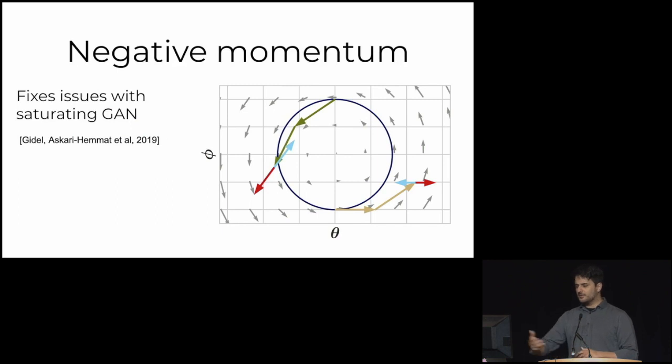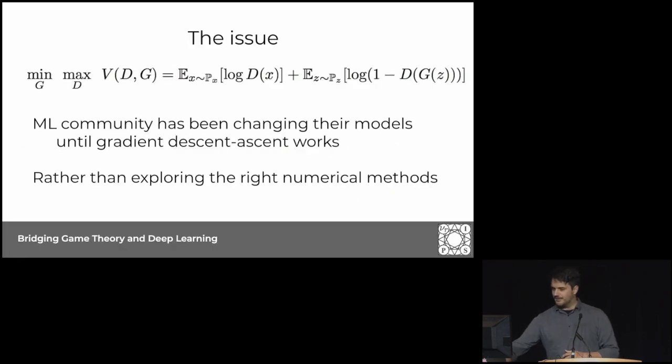Then you start thinking beyond that, what is the issue, right? My understanding of how things have been evolving in the machine learning community is the machine learning community has been adapting their models and their formulations until they work for gradient descent ascent. I have a formulation, gradient descent ascent doesn't work for it, so I'm going to change my formulation until gradient descent ascent works. That's the step from saturating to non-saturating GANs, for example.